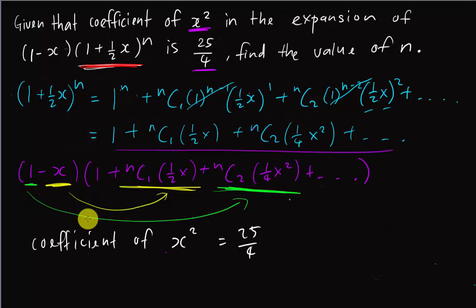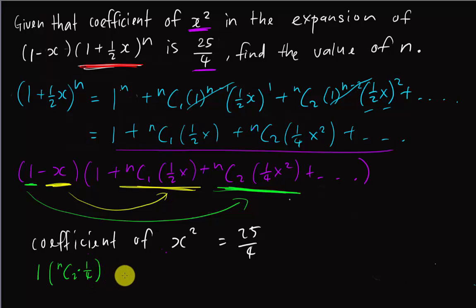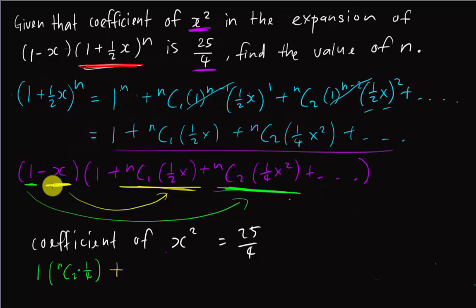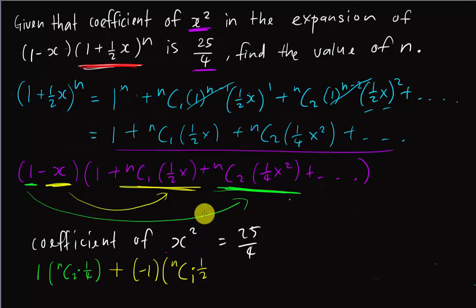So the equation for the coefficient of x² is: nC2·(1/4) minus nC1·(1/2) = 25/4. I only write the coefficients, not the x² itself. The '-1' from the '-x' term multiplied by nC1·(½) gives the second part of the equation.